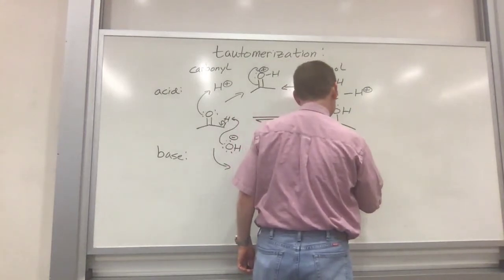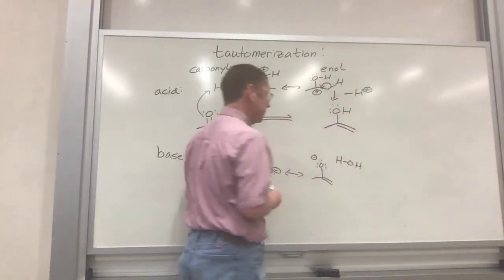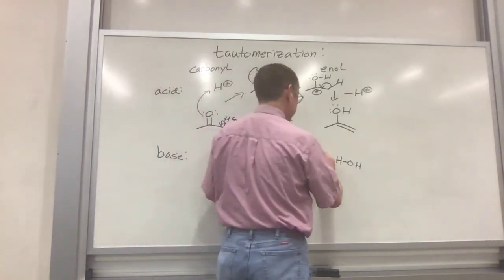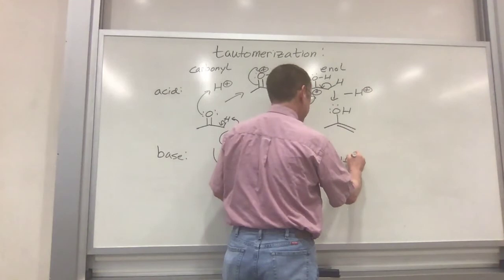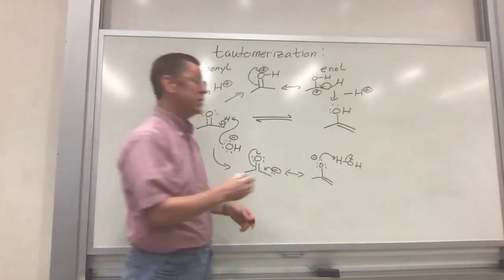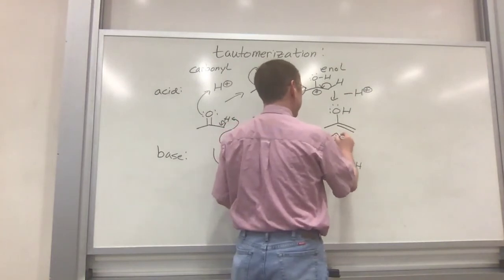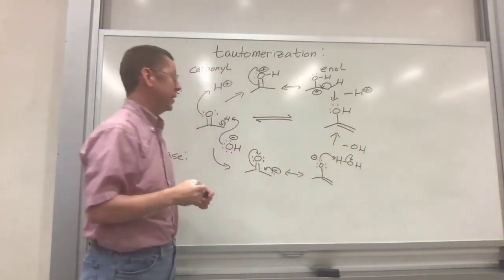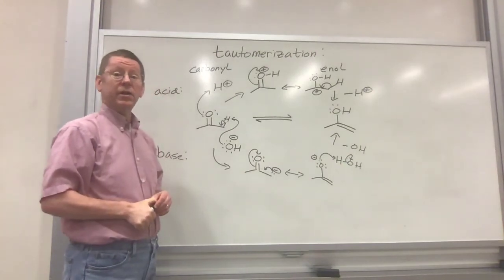So here in this case, using hydroxide, our protonated form of our base is water. So we can use the negative charge here, remove the hydrogen off of water, regenerate hydroxide, and wind up now with our enol form.